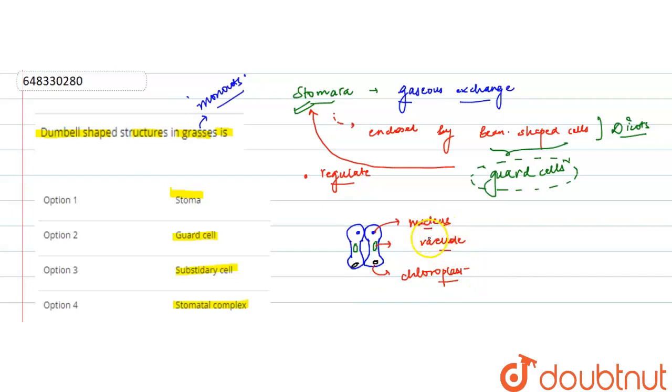So the grasses have distinct stomata which comprise with the two dumbbell shaped guard cells. So these are basically the dumbbell shaped guard cells that are joined by the subsidiary cells. So the option is not stoma and not the subsidiary cell. Okay, joined by subsidiary cell.